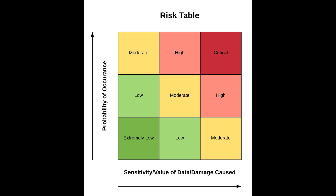IT assets require continuous monitoring since updates come out on a continuous basis. Items are ranked and categorized based on the Common Vulnerability Scoring System (CVSS), as well as the asset's importance to a company. CVSS is a free and open industry standard used to assess and communicate the severity and characteristics of software vulnerabilities.